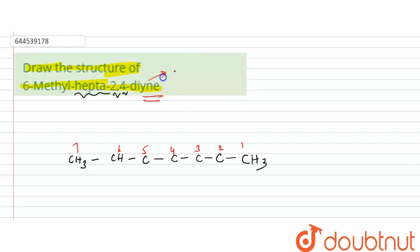Diyne means alkyne - triple bond is there. So at the second position you have a triple bond here, and at the fourth position you have a triple bond here.